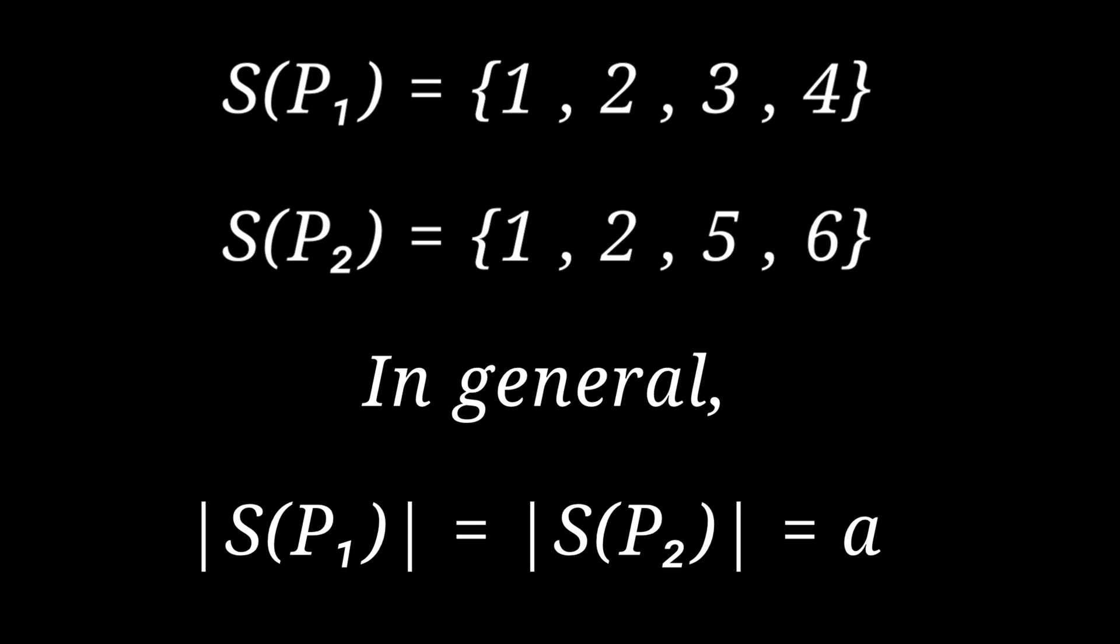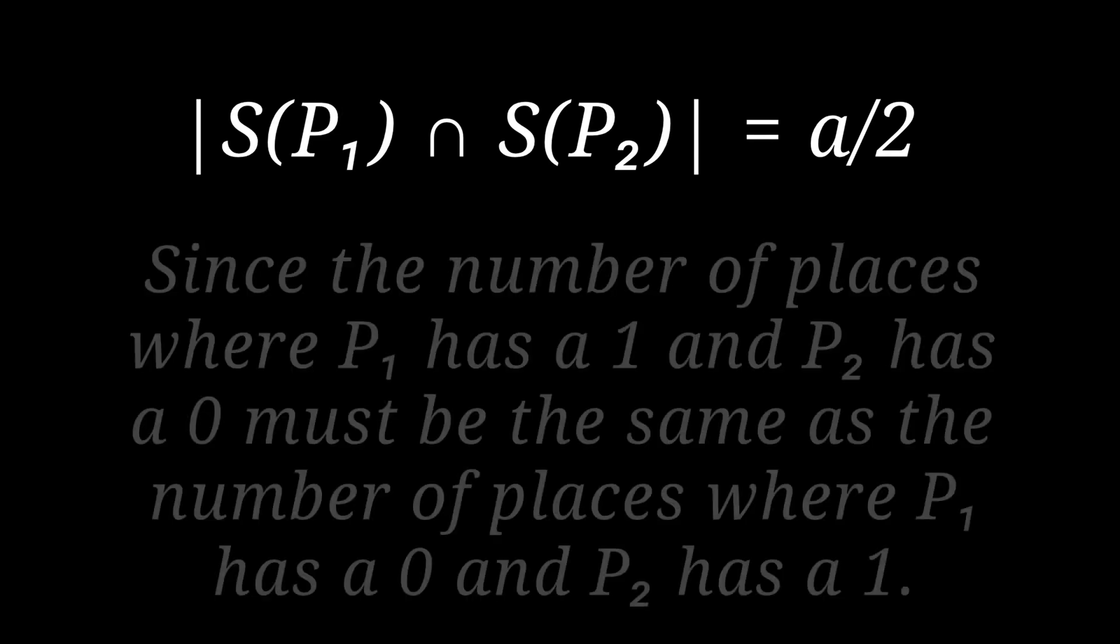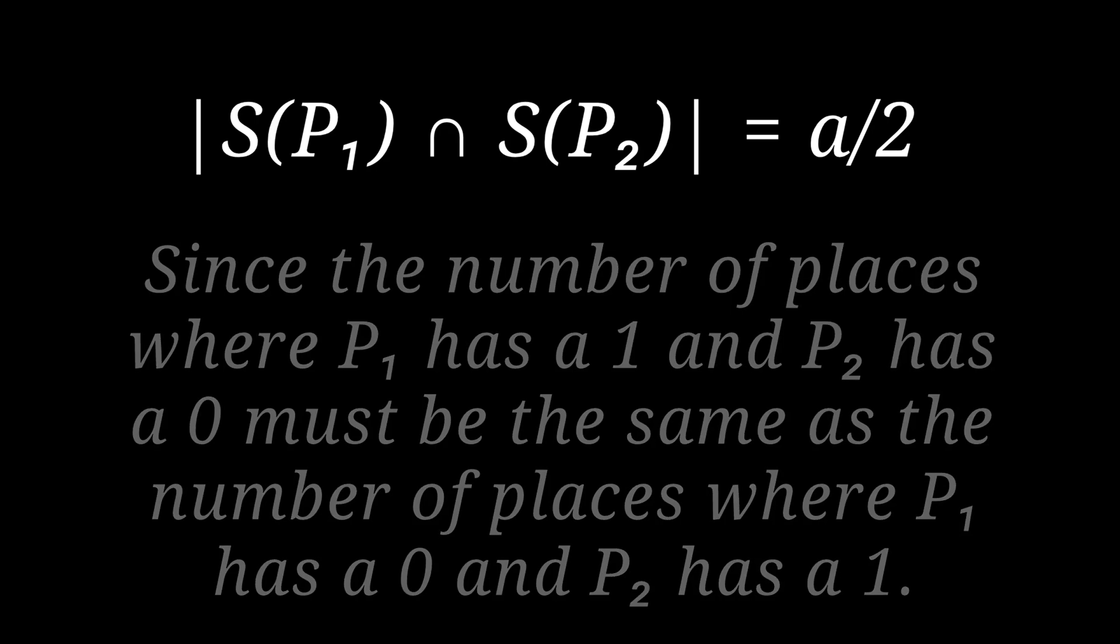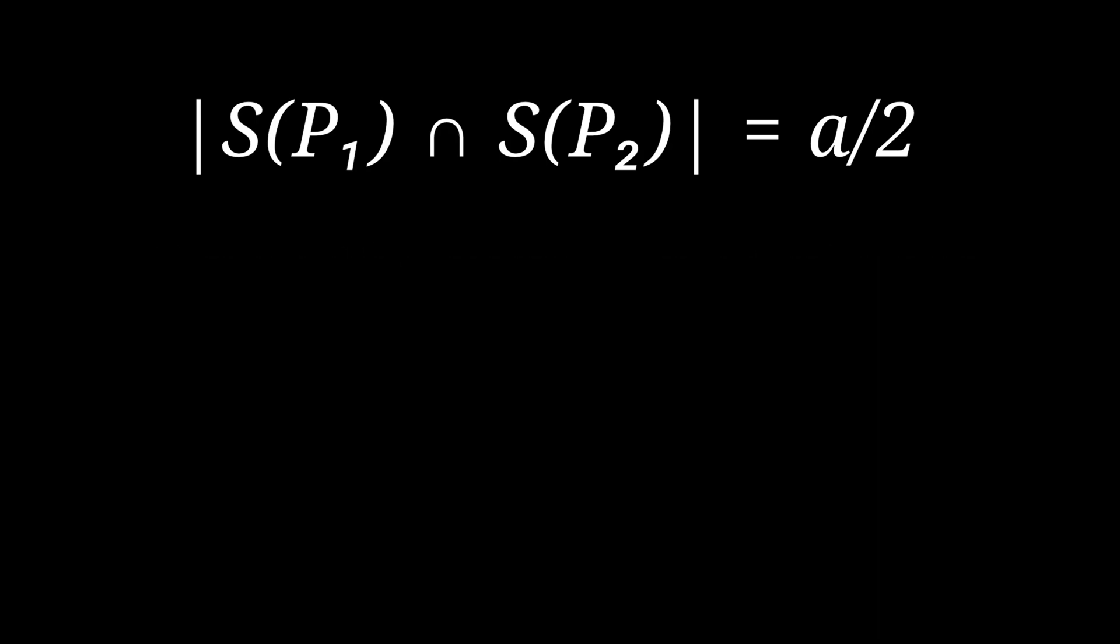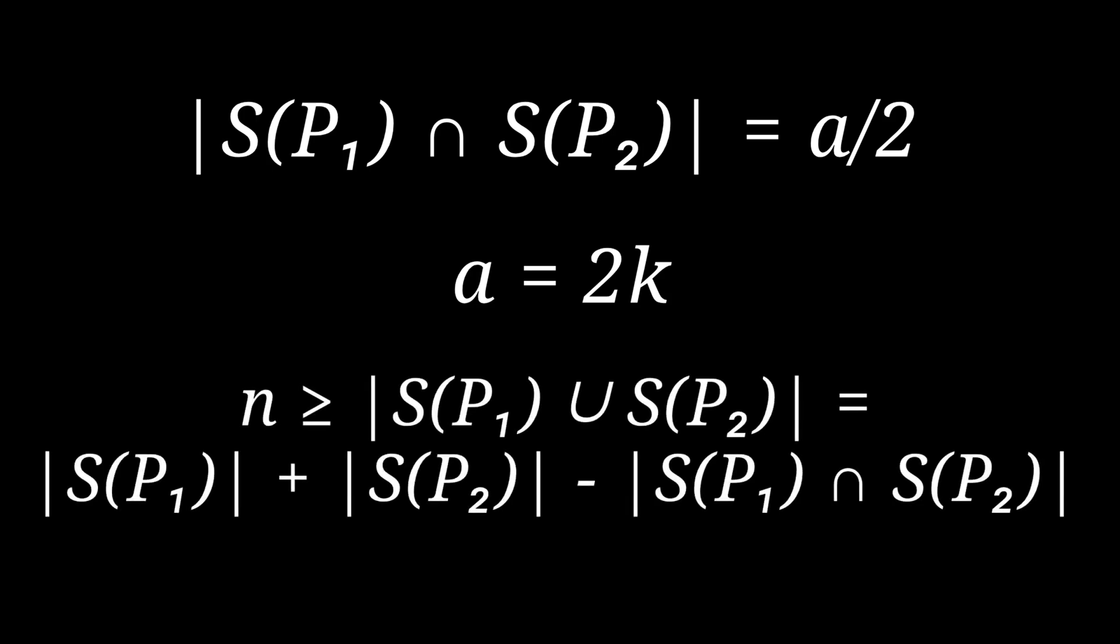Another thing which you may have noticed from this example is that the intersection of S(p1) and S(p2) has a/2 elements. I'll leave the reasoning for this to you but here's a hint on the screen. So this obviously must mean that a is even and if a is even we can say that it is equal to 2k where k is some integer. We also know that the union of S(p1) and S(p2) must have n or lesser elements and this gives us an upper bound on k.